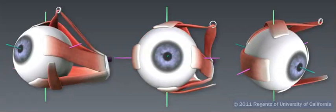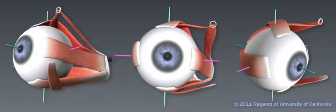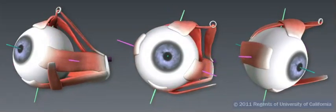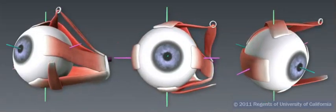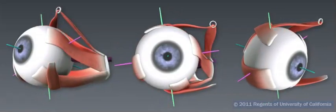About the visual gaze axis, the eyeball intorts, medially rotates, relative to the 12 o'clock position, or extorts, laterally rotates.